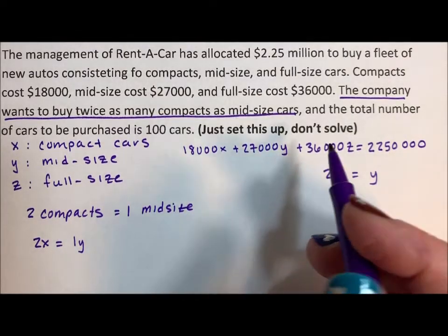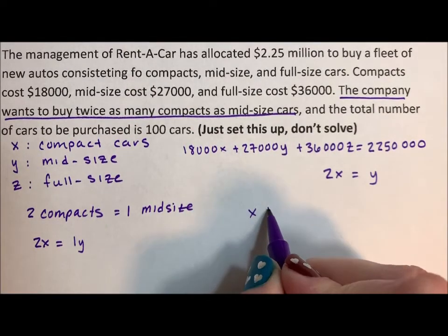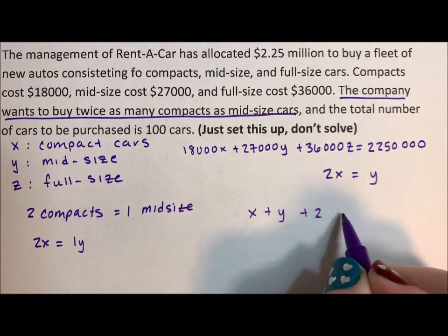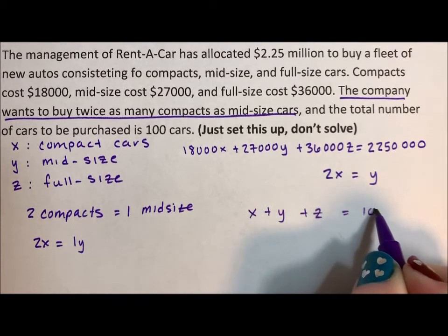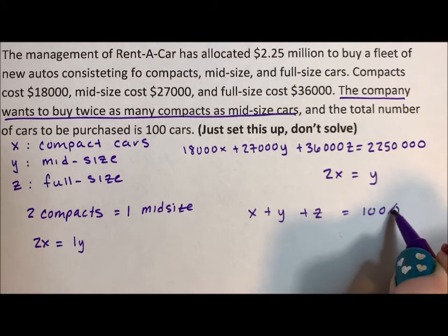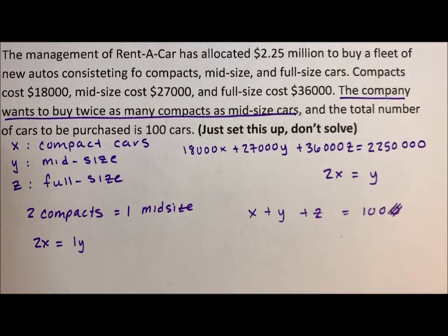And then our last equation says the total is 100. So X plus Y plus Z equals 100. That's a thousand. I was getting overzealous. I was getting overzealous in my zeros.